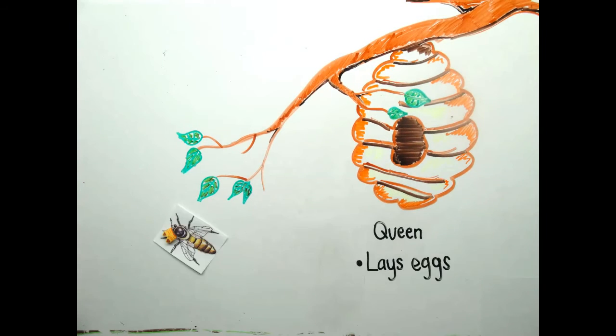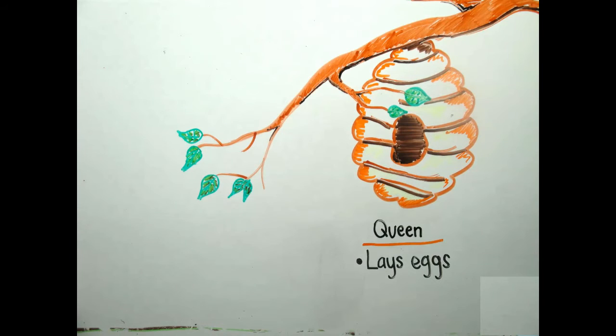The queen bee is larger and is the only female in the colony with ovaries developed enough to lay eggs.